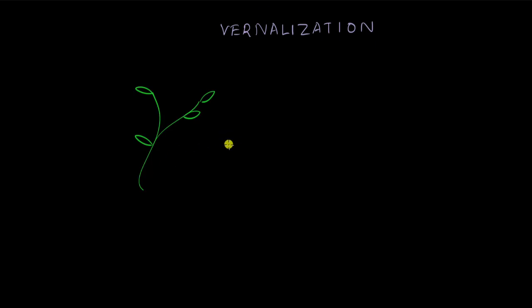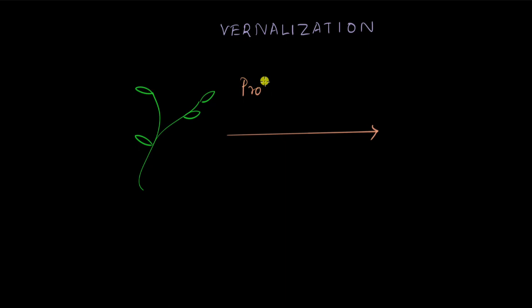Vernalization: a plant does not flower until it goes through something — a prolonged cold exposure. When a plant goes through a prolonged cold exposure, that means it is going through winter.